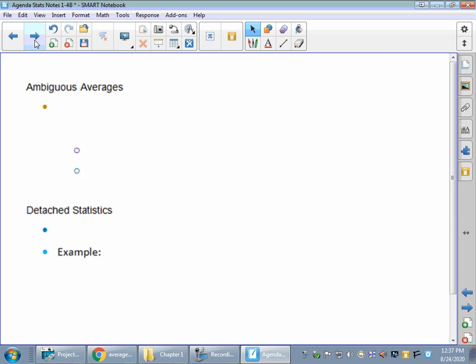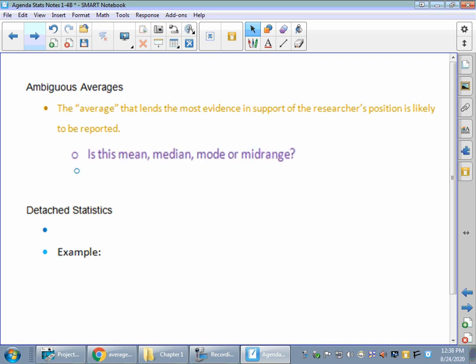The next big one that they talk about is ambiguous averages. This seems like a big idea, but you hear a lot of times about the average this and the average that. And average is an interesting term because a lot of people who are not mathematical just kind of apply average to a lot of things. When they're talking average, are they talking about the mean, the median, mode, or the mid-range?